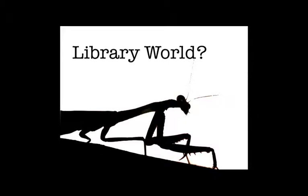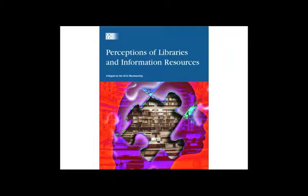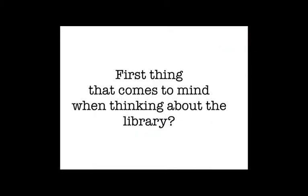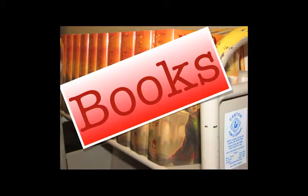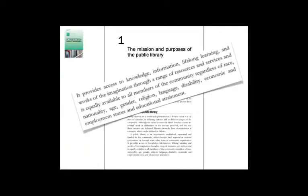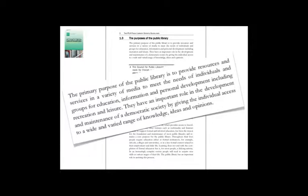Library world. The 2005 OCLC report 'Perceptions of Libraries and Information Resources' — the first thing that comes to mind when thinking about the library: books was 69%. By 2010, the same report showed books had gone up to 75%. What are we going to do about that? The IFLA Public Library Service Guidelines states that libraries have an important role in the development and maintenance of a democratic society by giving the individual access to a wide and varied range of knowledge, ideas and opinions — important role in the development and maintenance of a democratic society. I agree with that, by the way.